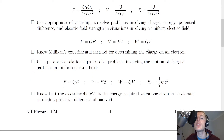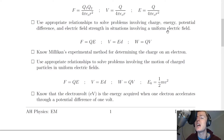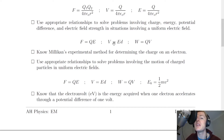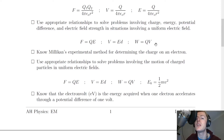You also need to be able to use appropriate relationships to solve problems involving charge, energy, potential difference, and electric field strength in situations involving a uniform electric field. For uniform electric fields we have: electric force F equals QE; electrical potential V equals Ed; and work done on a charged particle W equals QV.